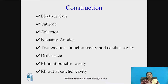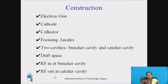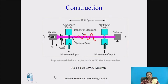Construction. It includes the electron gun, cathode, collector, focusing anodes, two cavities — namely the buncher cavity and catcher cavity — a drift space, RF input at the buncher cavity, and RF output at the catcher cavity.